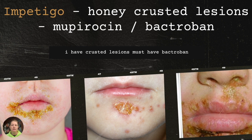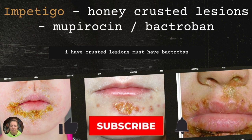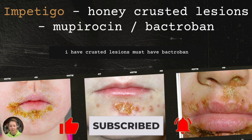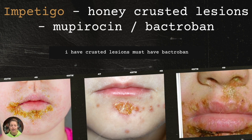The first condition is impetigo. When you hear impetigo, I want you to think honey-crusted lesions and Mupirocin cream, which is also Bactroban. The mnemonic here is: I have crusted lesions, must have Bactroban. You can see the I in impetigo, H for honey, C for crusted, L for lesions, Mupirocin, and B for Bactroban. 'I have crusted lesions, must have Bactroban.'